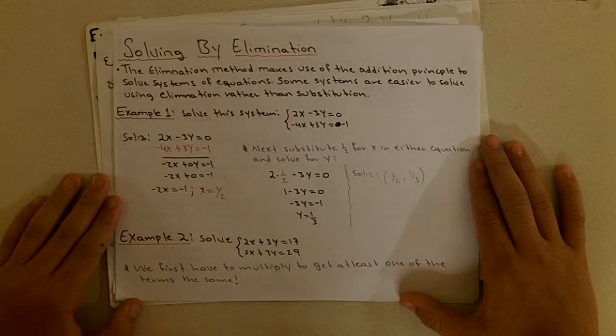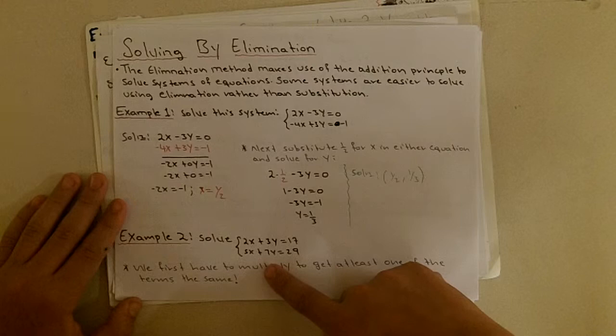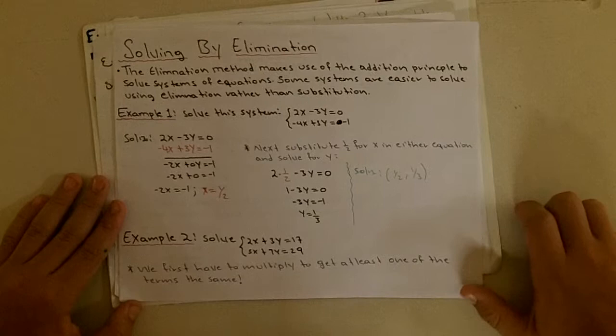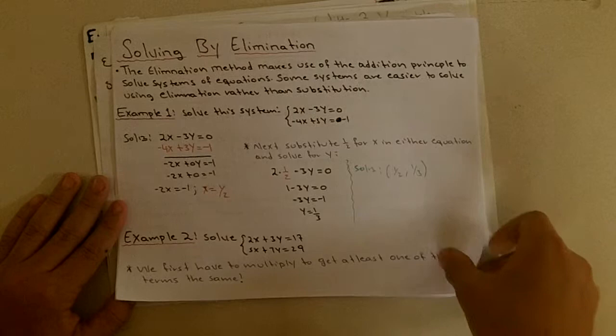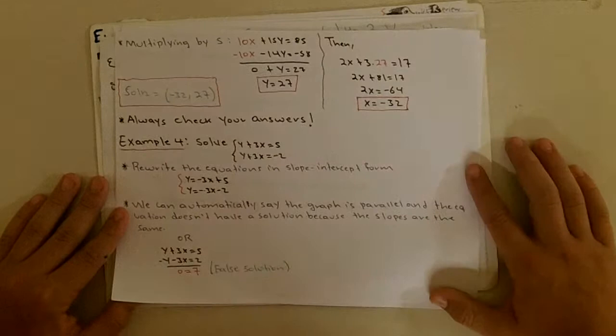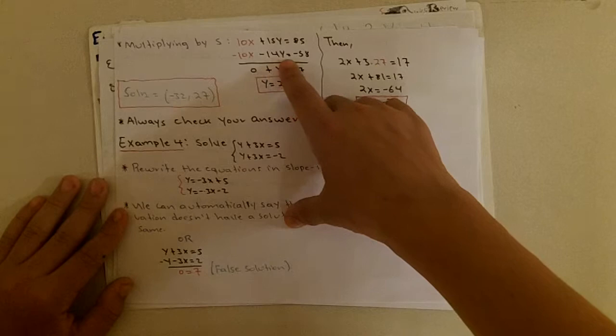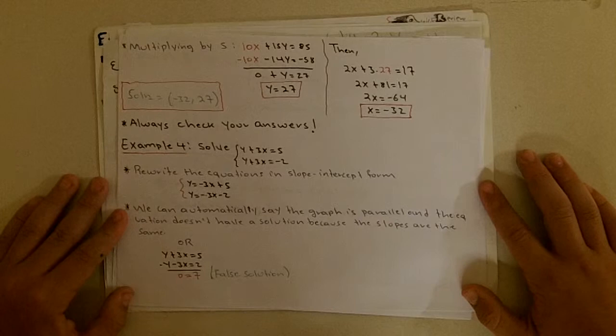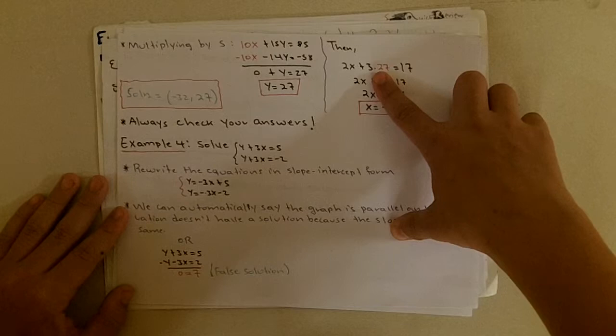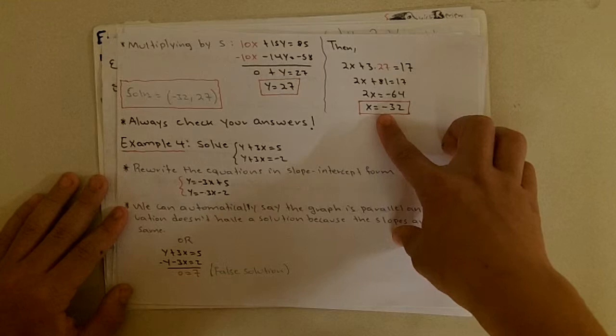Example 2: solving 2x plus 3y equals 17 and 5x plus 7y equals 29. Multiply the first equation by 5 to get 10x plus 15y equals 85, and the second by negative 2 to get negative 10x minus 14y equals negative 58. Adding those together gives y equals 27. Plugging back into an original equation gives x equals negative 32, so the solution is (−32, 27).